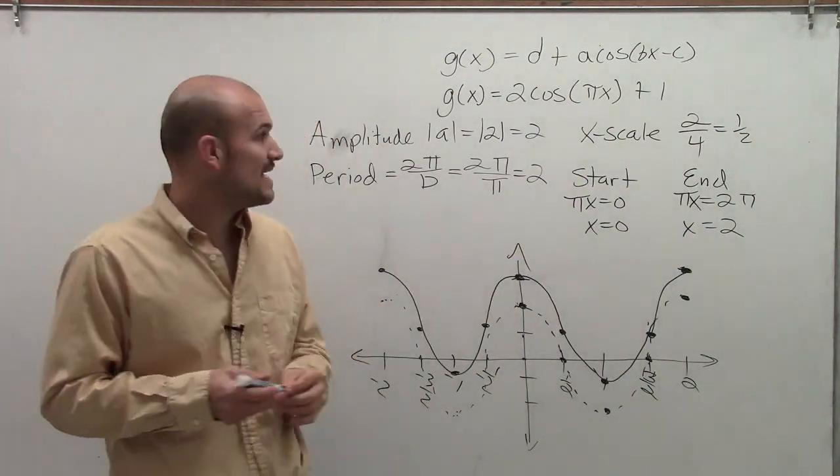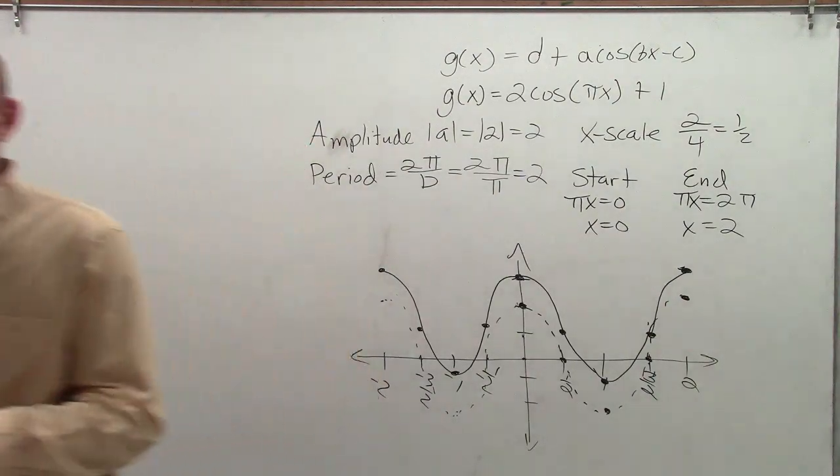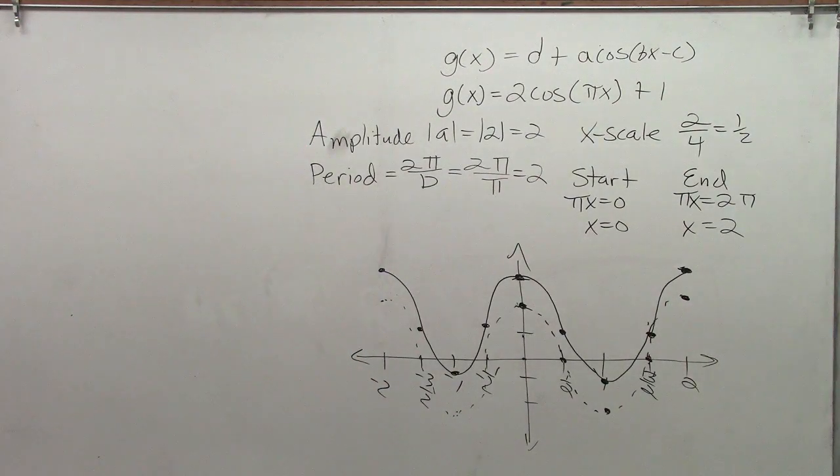And these graphs are going to continue in the left and right direction. So there you go, ladies and gentlemen. That's how you graph 2 cosine of pi x plus 1. Thanks.